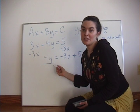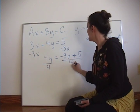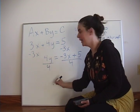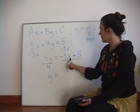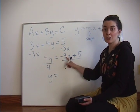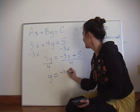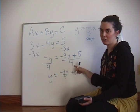So we're going to divide both sides by 4. And then 4y divided by 4 is just y. Then if we are going to distribute the 4 to both of the things that are being divided, it's negative 3x over 4 plus 5 over 4.